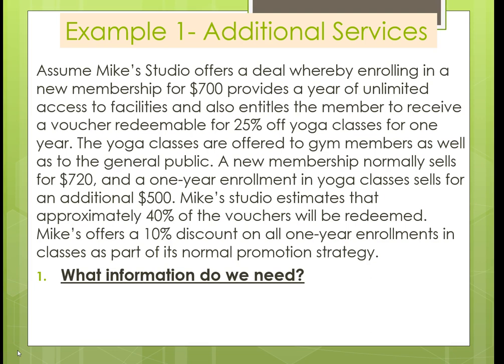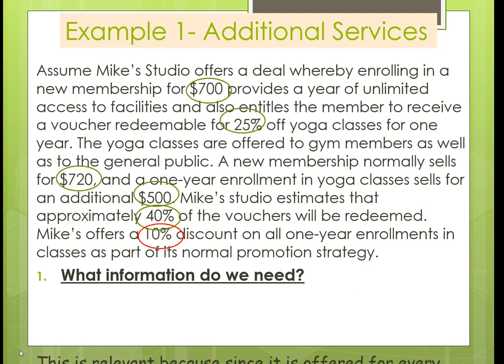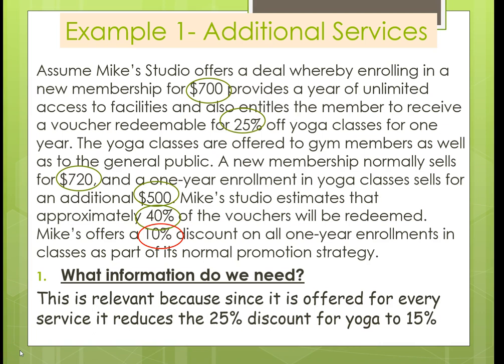Going back to our problem — what information do we need? We need the $700, the 25% off the classes, the $720, the normal cost of the yoga classes, and how many people we think will actually use the coupons. We also have to consider that there's normally a 10% discount on yoga classes, which reduces our 25% to really just a 15% discount, because the 10% is not unique to this offer.